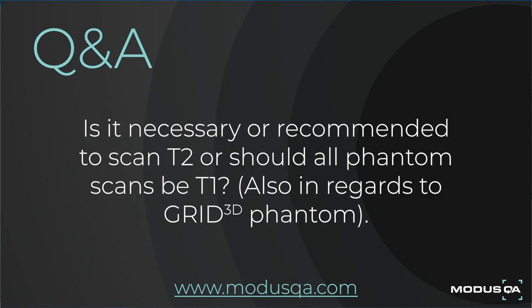Eric's question is: is it necessary or recommended to scan T2, or should all phantom scans be T1, also in regard to the MRID 3D phantom? We do support both T1 and T2 weighted. T2 weighted scans can be very long if the parameters are chosen to be heavily T2 weighted. For regular QA, the worst case is a T1 gradient echo sequence, which is very fast. It is usually advised to use your worst-case type of scan if it can be acquired in five minutes versus a 20 or 40 minute scan. If you do have time for periodic QA, T2 scans can also be analyzed.